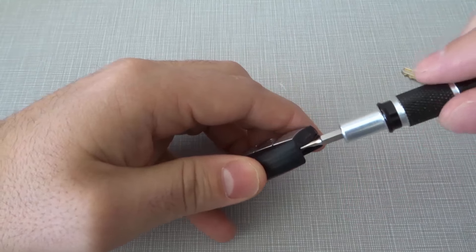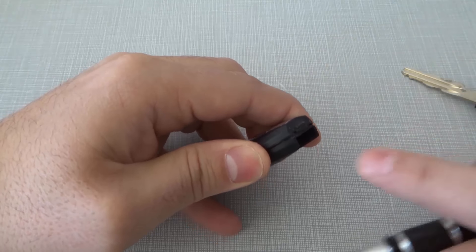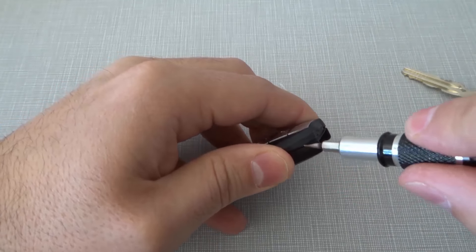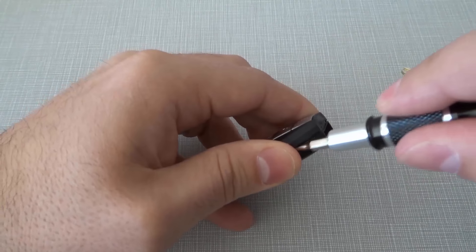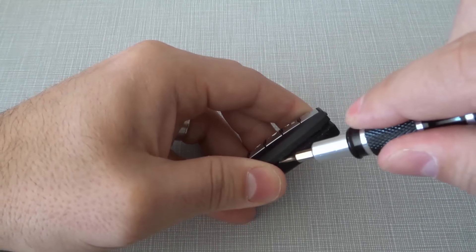I'm going to put the flathead screwdriver in there, give it a little twist, and I'm holding it open. I'm just going to use the flathead screwdriver to continue to work my way around the key fob and just pry it apart.